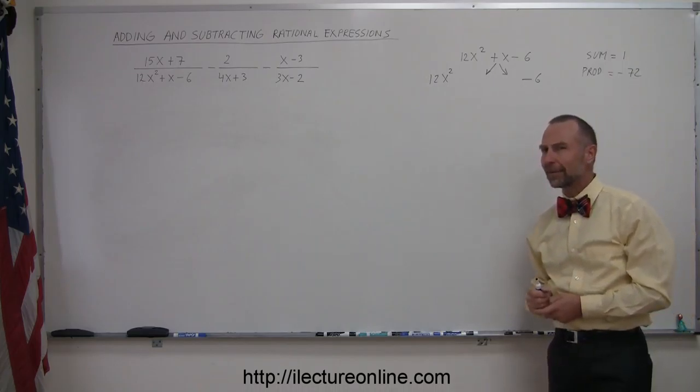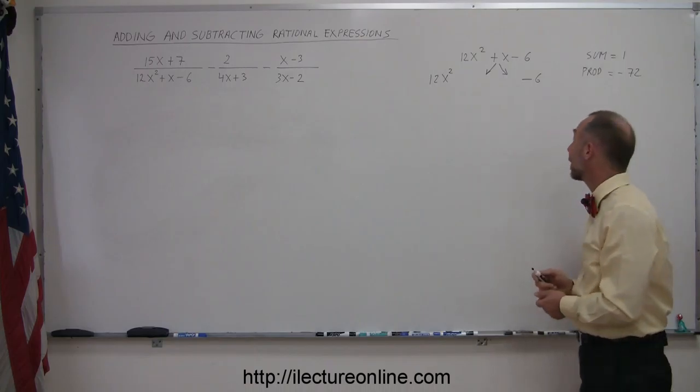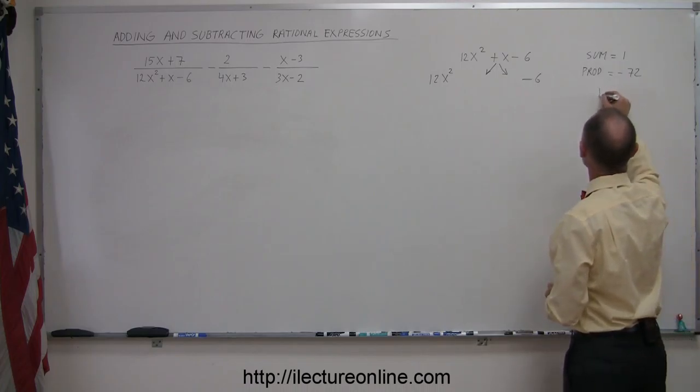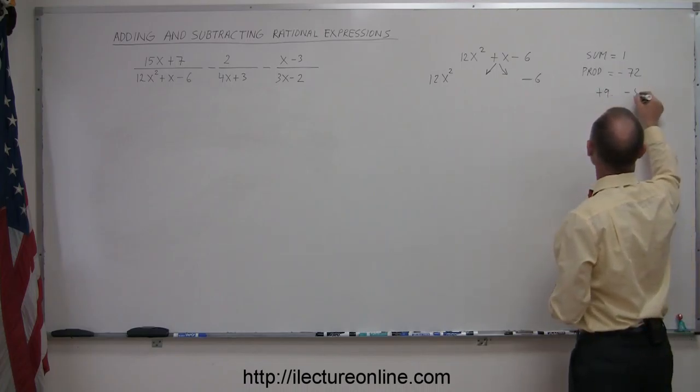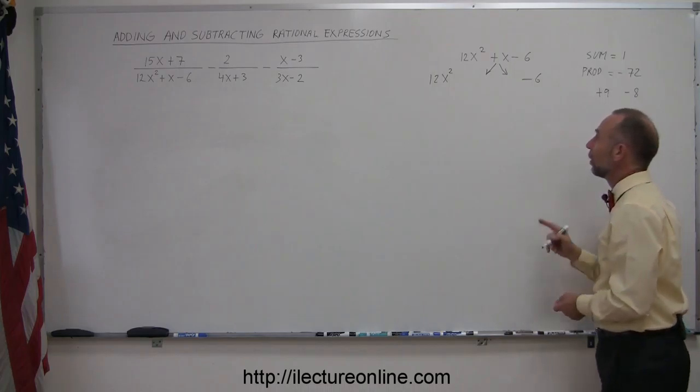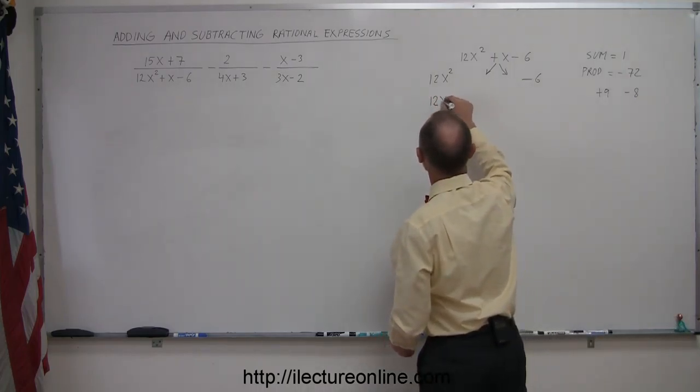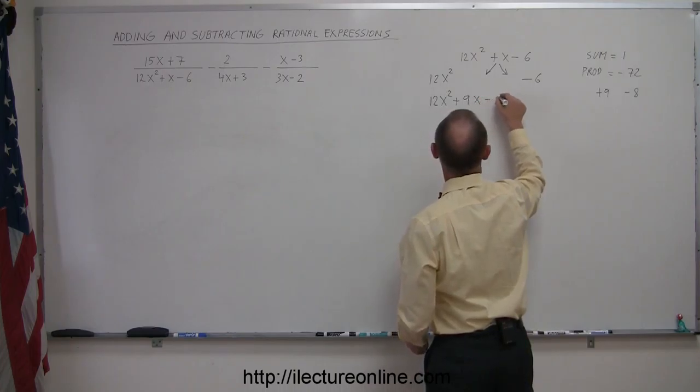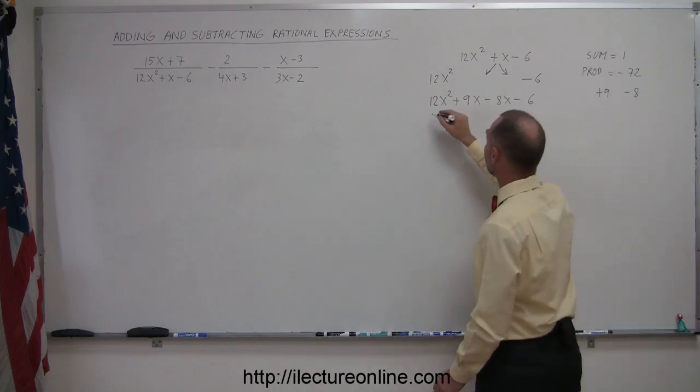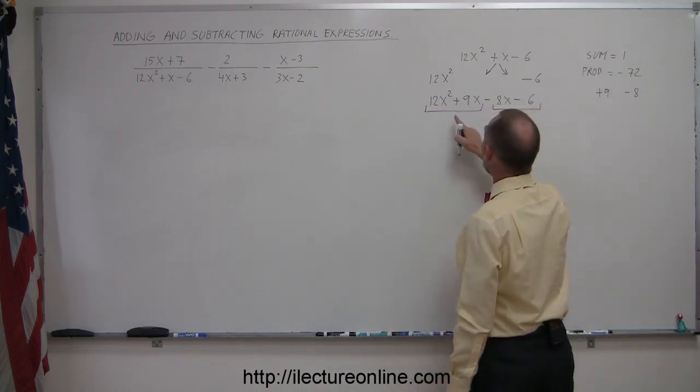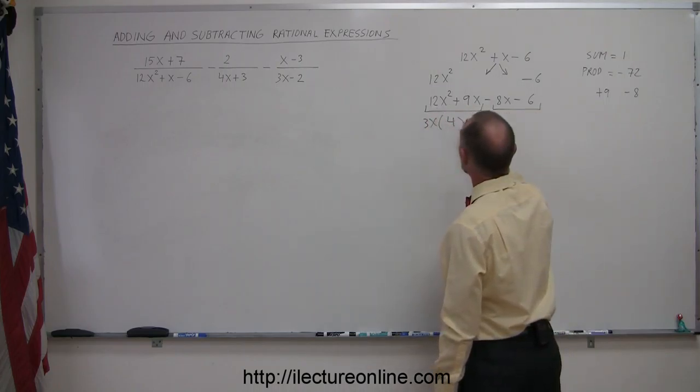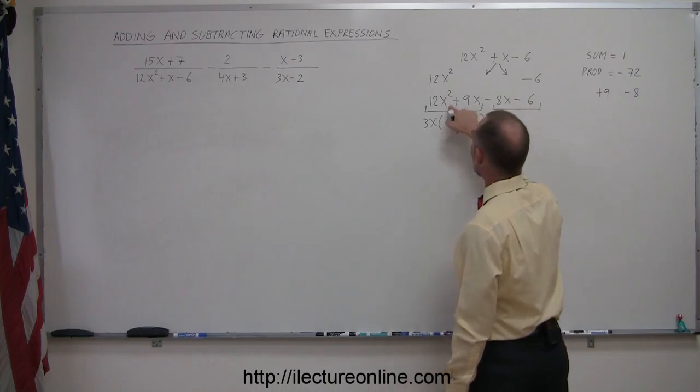So I'm probably looking at 8 times 9, because 8 times 9 is 72. And so that means I'm probably looking for a positive 9 and a minus 8. So 9 times a negative 8 is minus 72, and 9 plus a negative 8 is positive 1. So then I come down here and I write this as 12x² + 9x - 8x - 6. And now I group them in groups of two. And I factor out what's common, and what's common here is a 3x. So I'll write 3x times (4x + 3). If I multiply this back together, I get what I started with.